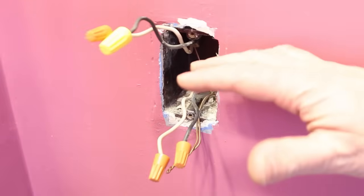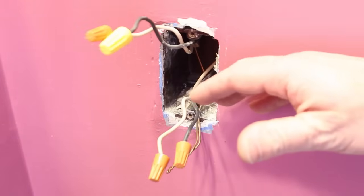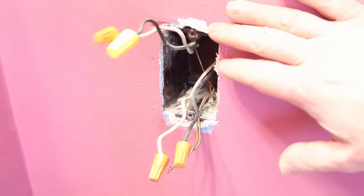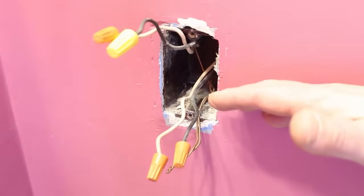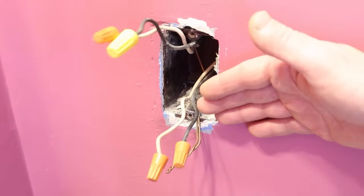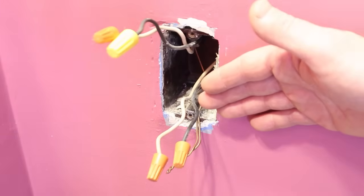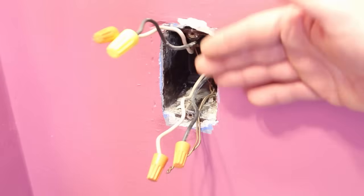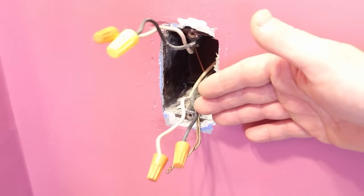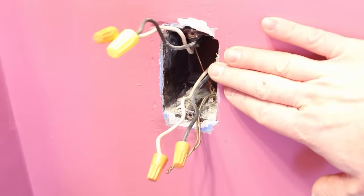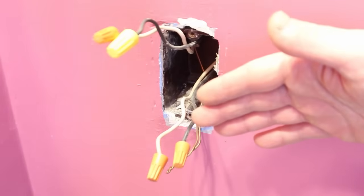I capped off all the wires and separated them based on their pairings. So this hot and neutral belong together, and this hot and neutral belong together. Now I need to figure out which set are the load wires and which are the line wires. The load wires carry electricity from this outlet downstream to other outlets.